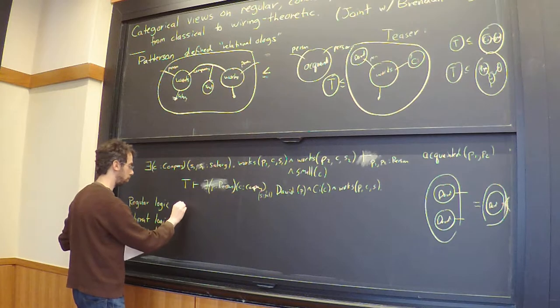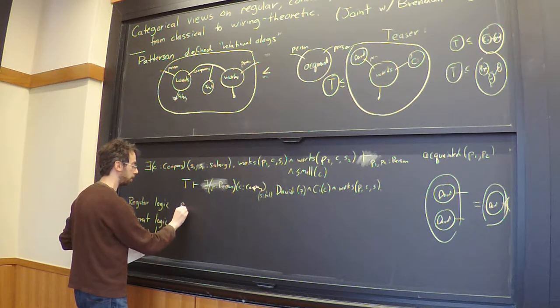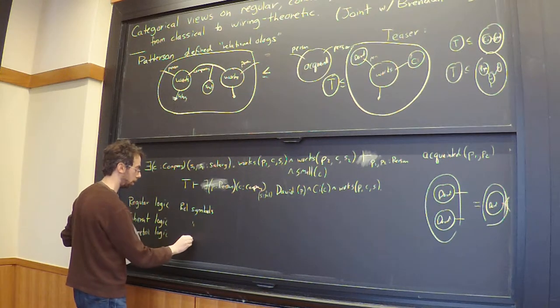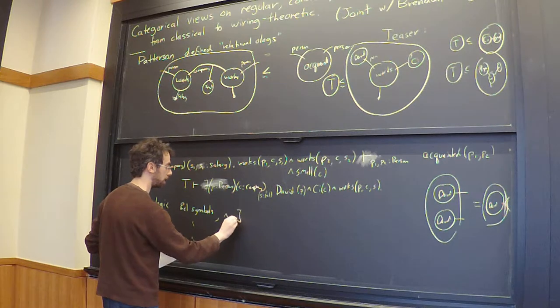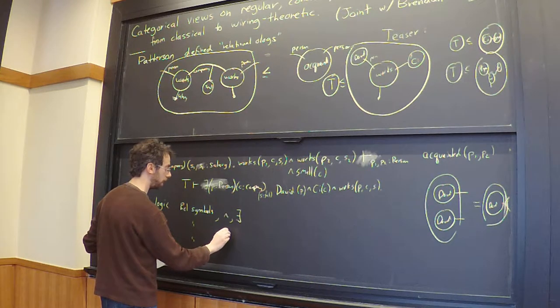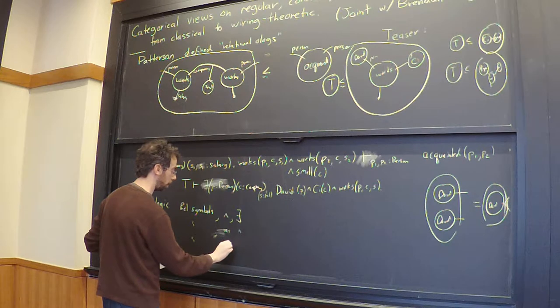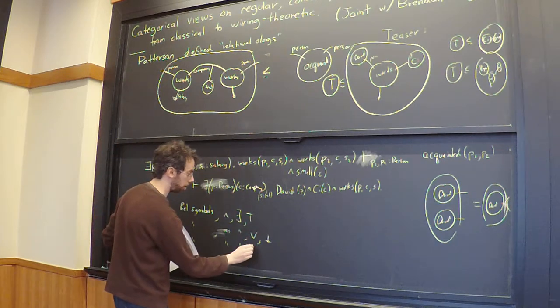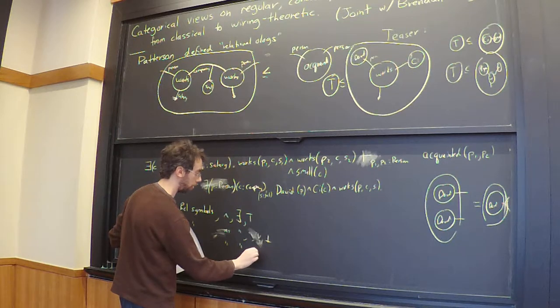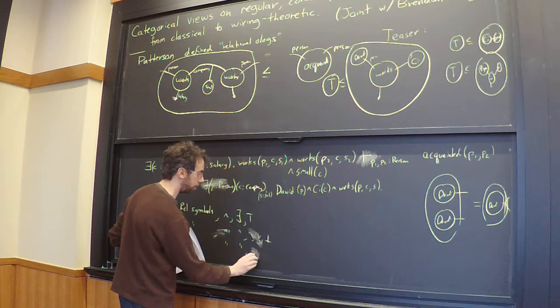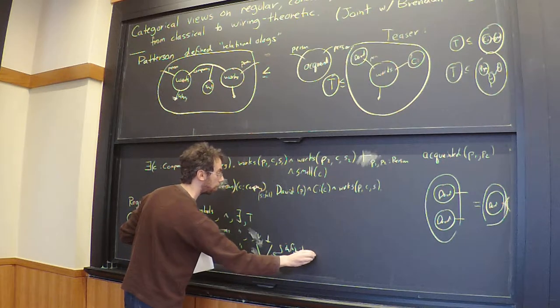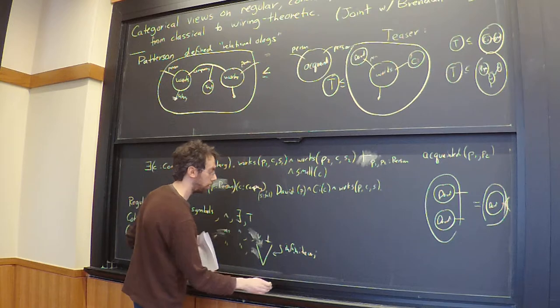So regular logic, coherent logic, and geometric logic. These have relation symbols like works and small. Regular logic has and and exists, and you're allowed to form anything with and and exists. Here you're allowed to add ors and false—you also have true there—and here you're allowed to add infinite ors.